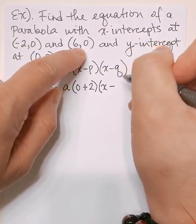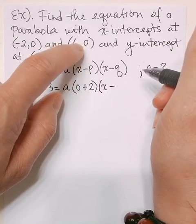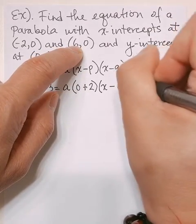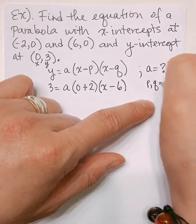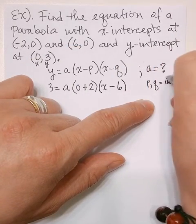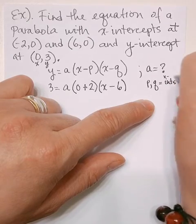q is your second x-intercept. So 6 is your second x-intercept, which is q. Remember, p and q are the x-intercepts.